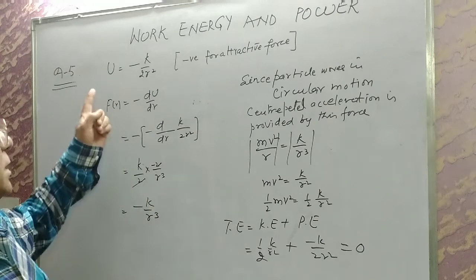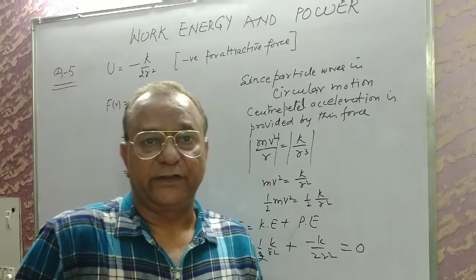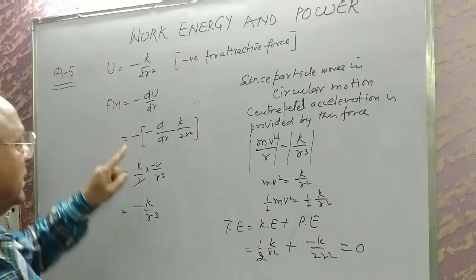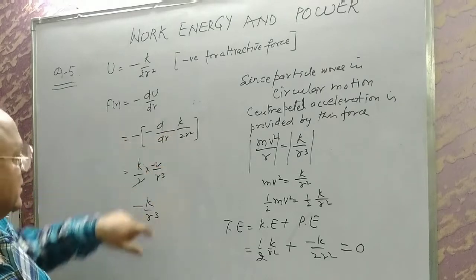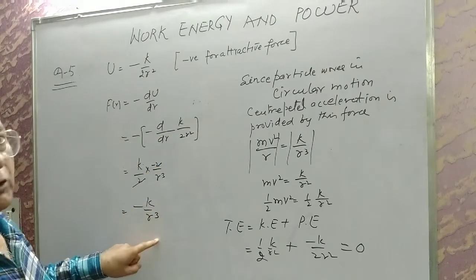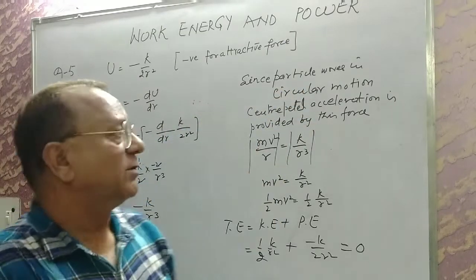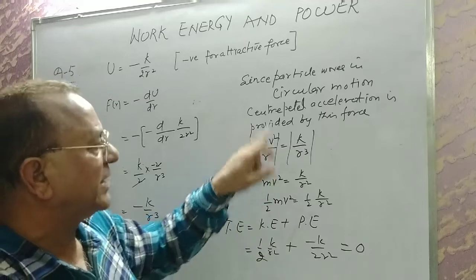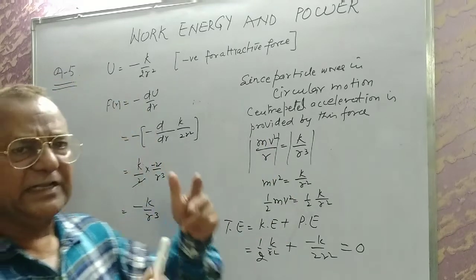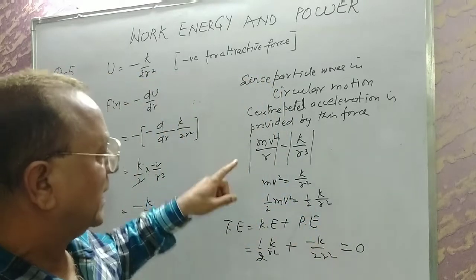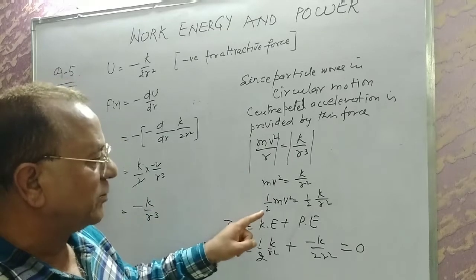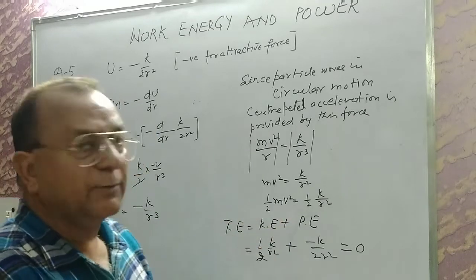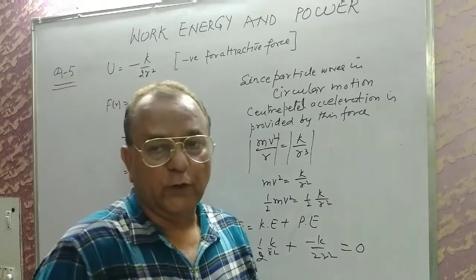Question five: potential energy is given. Using F = −dU/dr we find force by differentiation, giving F = −k/r³. Since the particle moves in circular motion, centripetal force is provided by this force: mv²/r = k/r³, so ½mv² = ½k/r². Total energy = kinetic energy + potential energy = ½k/r² + (−k/2r²) = 0. Answer is D.